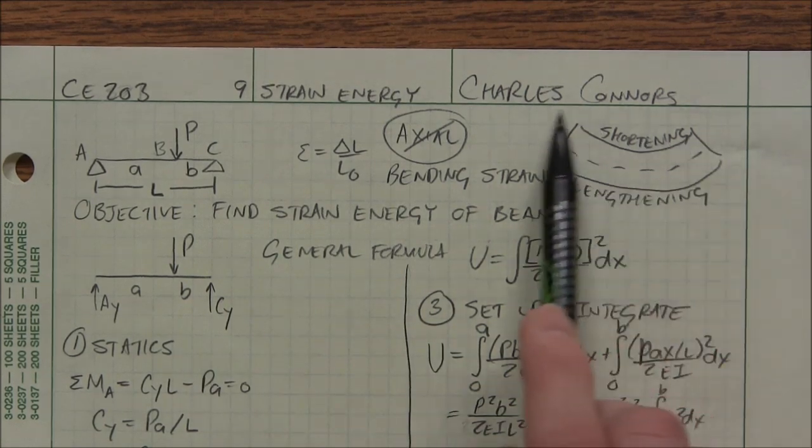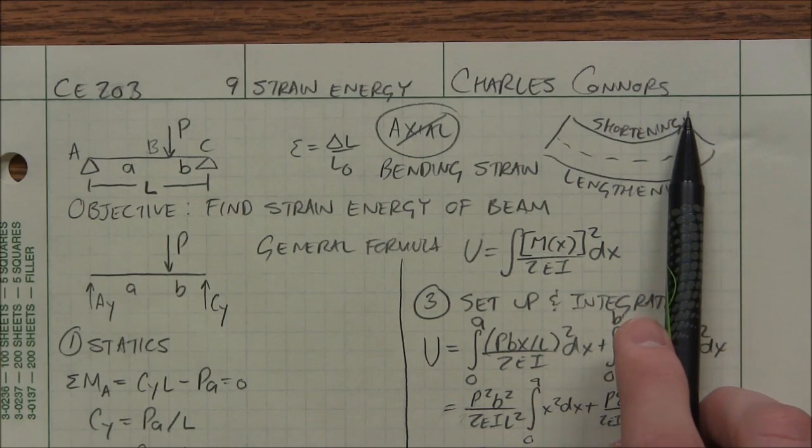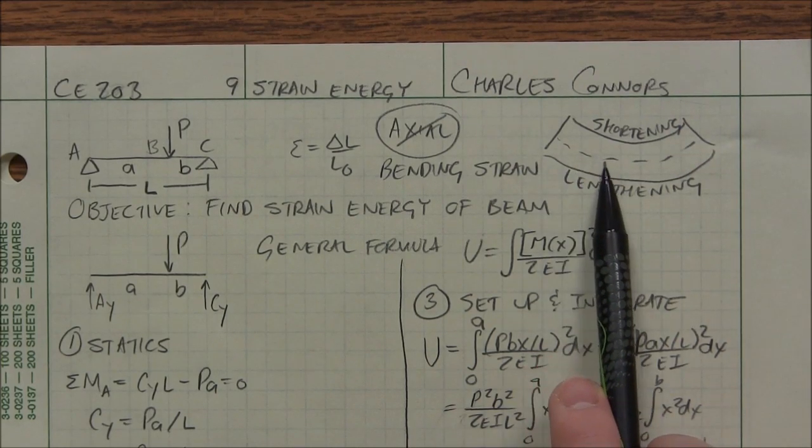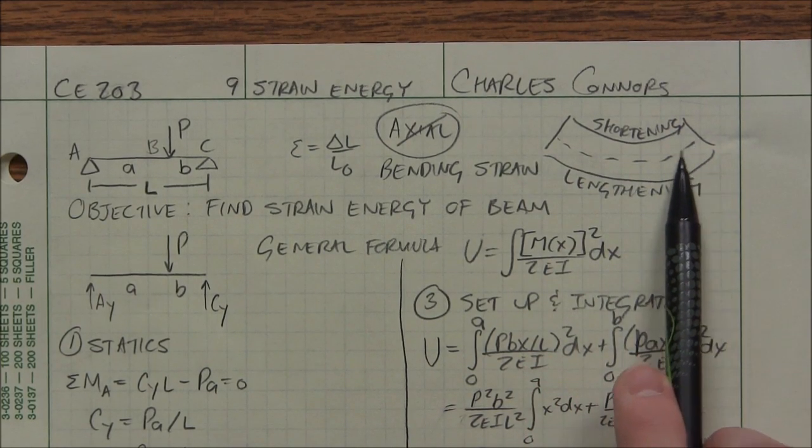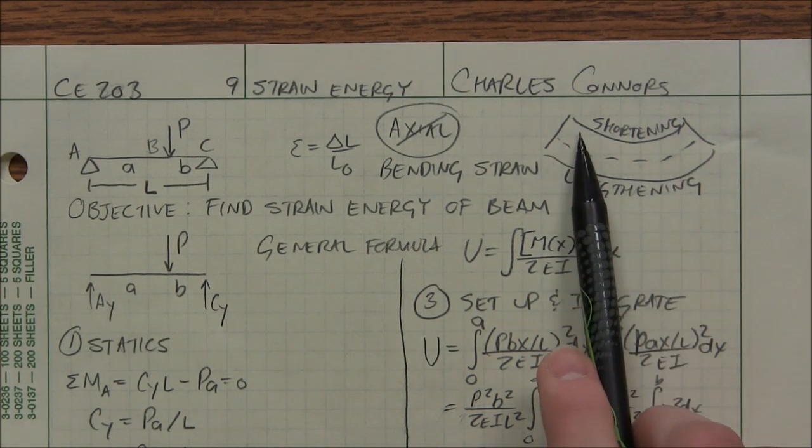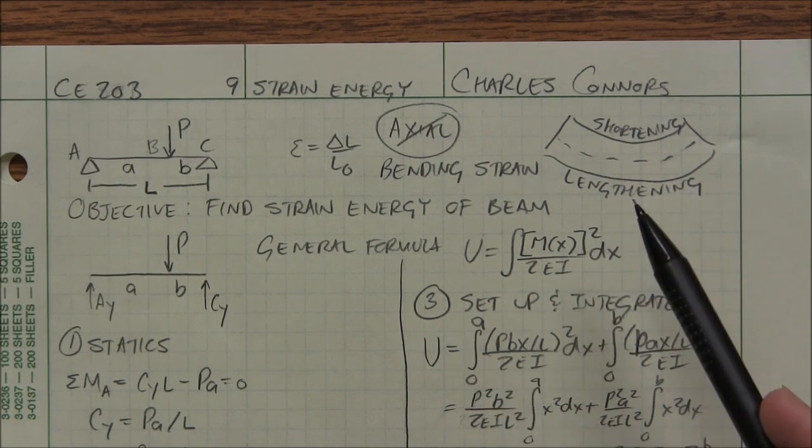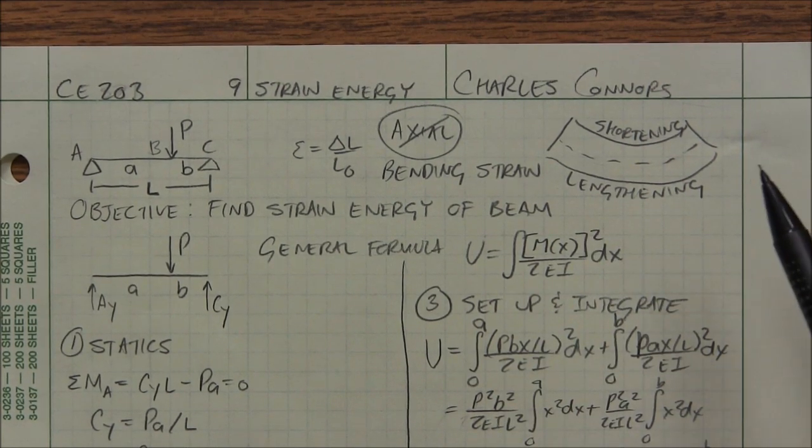Now what are we actually calculating here? We're calculating, if you look at this right here, you remember that when we bend something, it's not necessarily straining on the neutral axis. In fact, it wouldn't be straining on the neutral axis. But it would be shortening on one side and lengthening on the other side. And that stores up a certain amount of energy. That's what we're calculating.